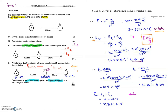Both electric fields are to the right at point P because these are positive charges and field lines move away from positive charges. If point P were on the left-hand side - let's call it point R - then the electric field due to Q1 and Q2 would both have been to the left. But our point is on the right-hand side.